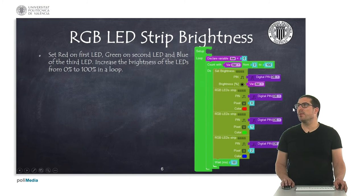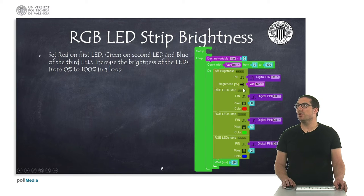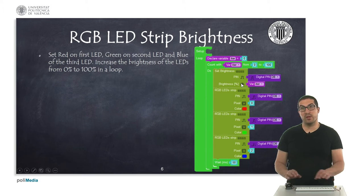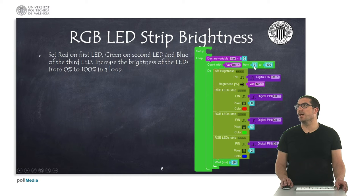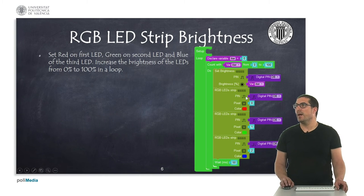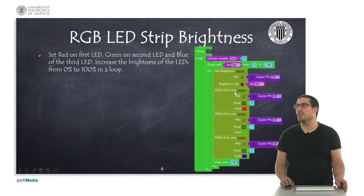In this second example, what I'm doing is repeating exactly the same thing as before, but now it's inside the loop. In the loop, I'm changing or modifying the brightness of the whole strip. I have declared a variable in which I simply iterate from 0 to 100 percent — this will be the brightness set for the strip. Once we have set the brightness, this won't be effective until we change the colors of the LEDs, which is why we have this instruction here.